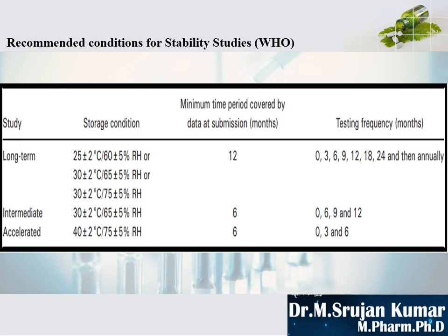For intermediate stability studies, temperature should be maintained at 30 ± 2°C and relative humidity at 65 ± 5%. Minimum time period is 6 months, and you can extend to 1 year. Testing frequency is 0, 6, 9, and 12 months. For accelerated stability conditions, temperature is maintained at 40 ± 2°C and relative humidity at 75 ± 5%. The minimum time period is 6 months and testing frequency is 0, 3, and 6 months.